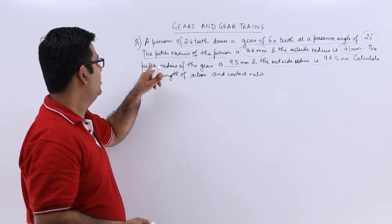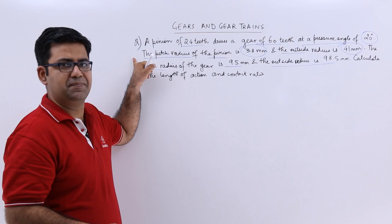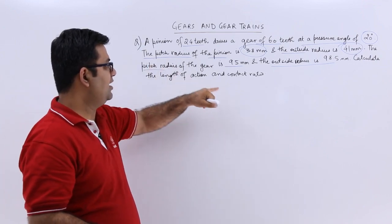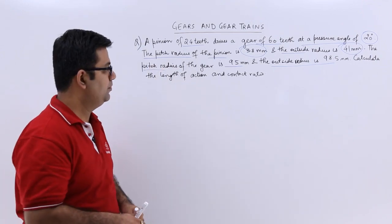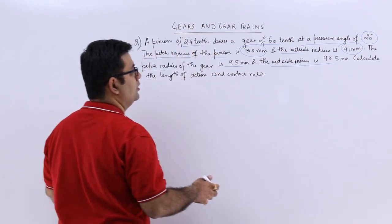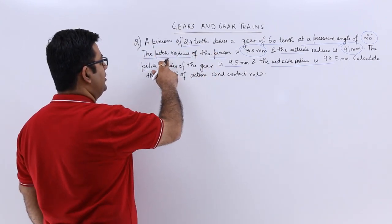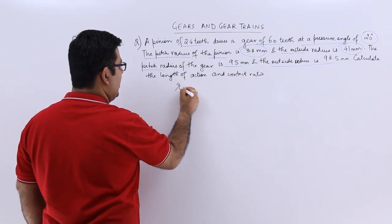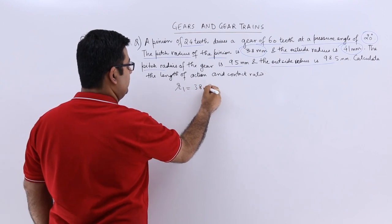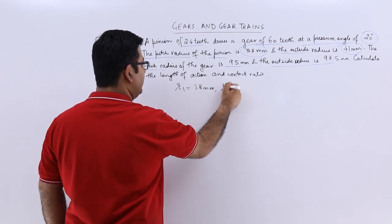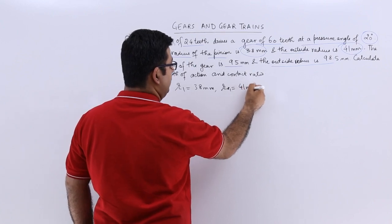Now for pinion I will use the subscript 1 and for gear I will use the subscript 2. So the pitch radius R1 is 38 mm and the addendum radius is 41 mm.